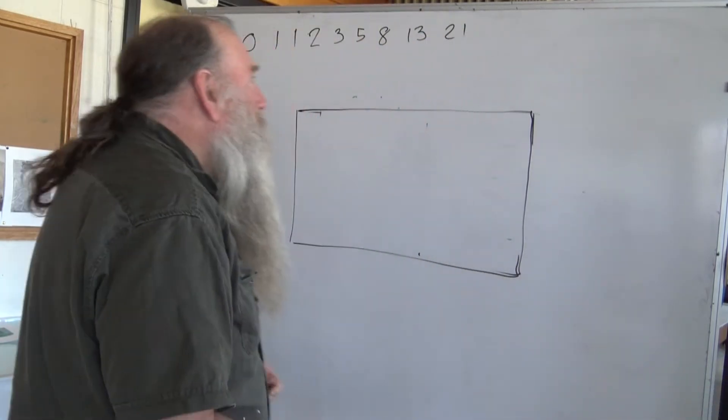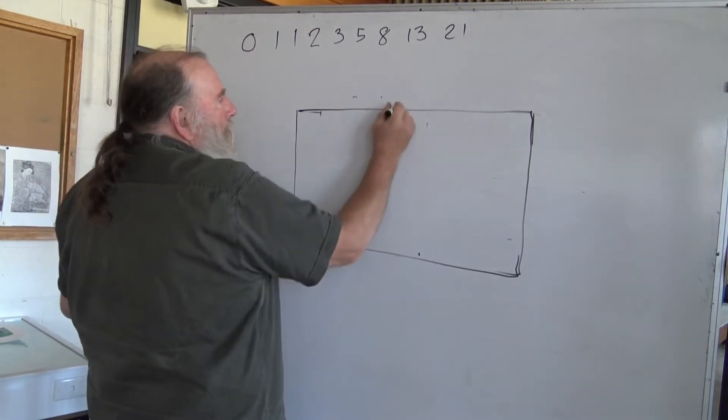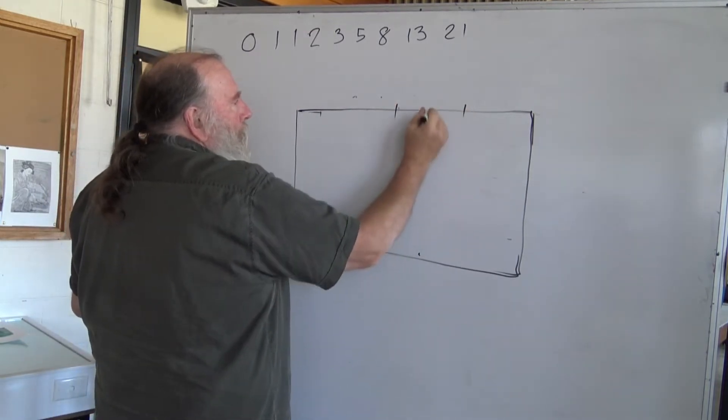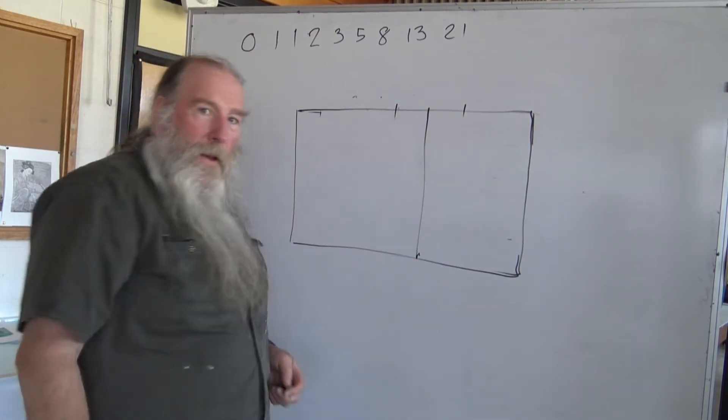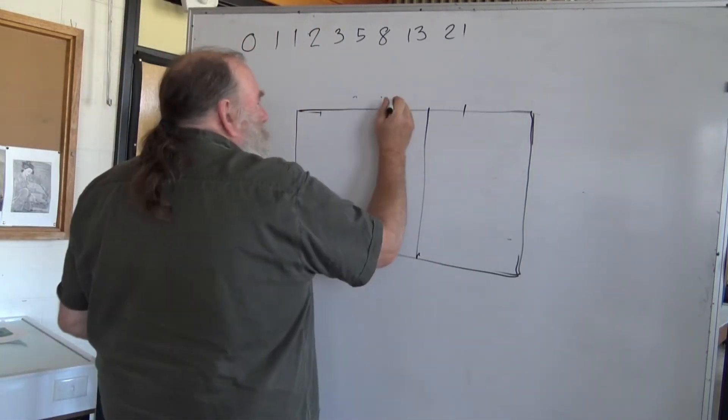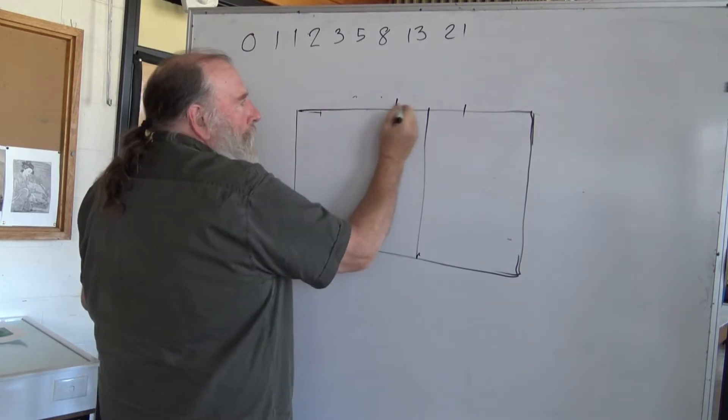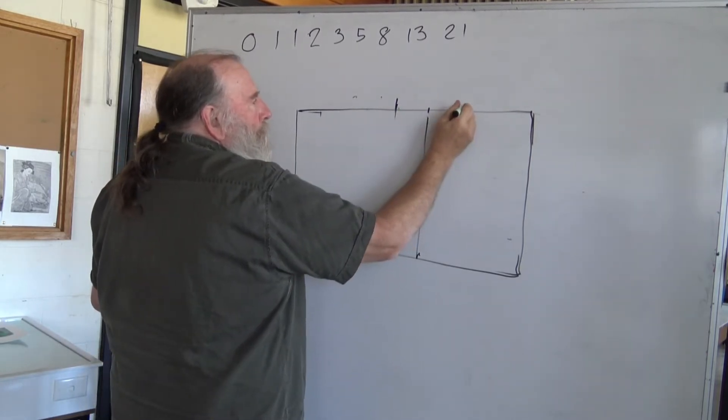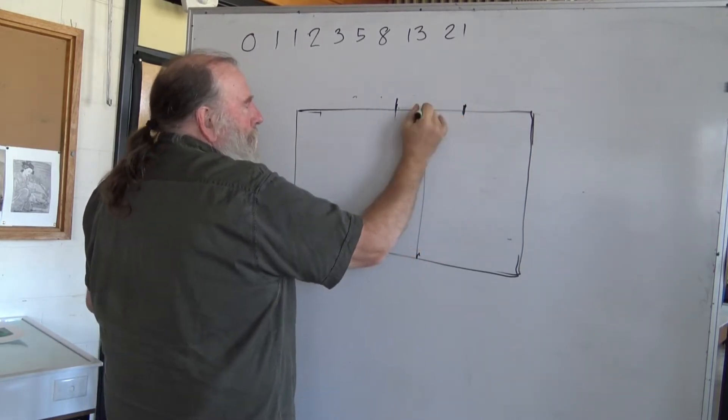First I'm going to show you the really simple way of getting five eighths. You go half, half of that, and there it is. Half, half, half. That's easy to remember, isn't it? You go half, which is half of the whole thing. Half of that is a quarter. And then half of that is an eighth.